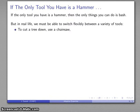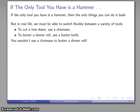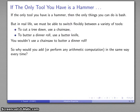If I want to cut a tree down, I'll use a chainsaw. If I want to butter a dinner roll, I'll use a butter knife. I won't use a chainsaw to butter a roll, and I won't cut down a tree with a butter knife or a herring. So why would I perform any arithmetic computation the same way every time?